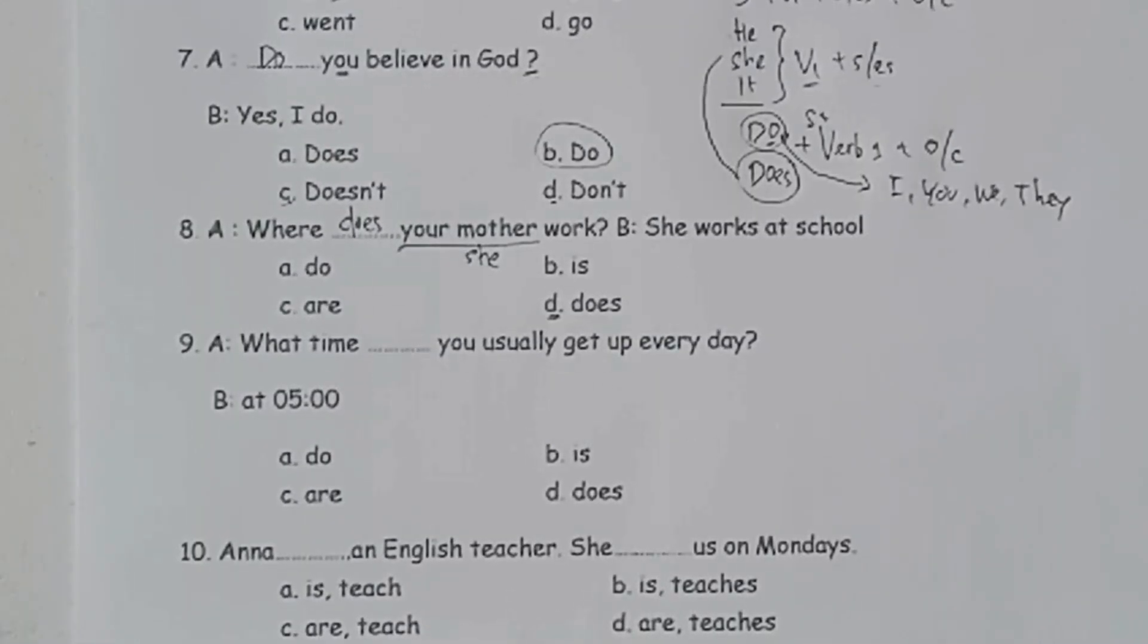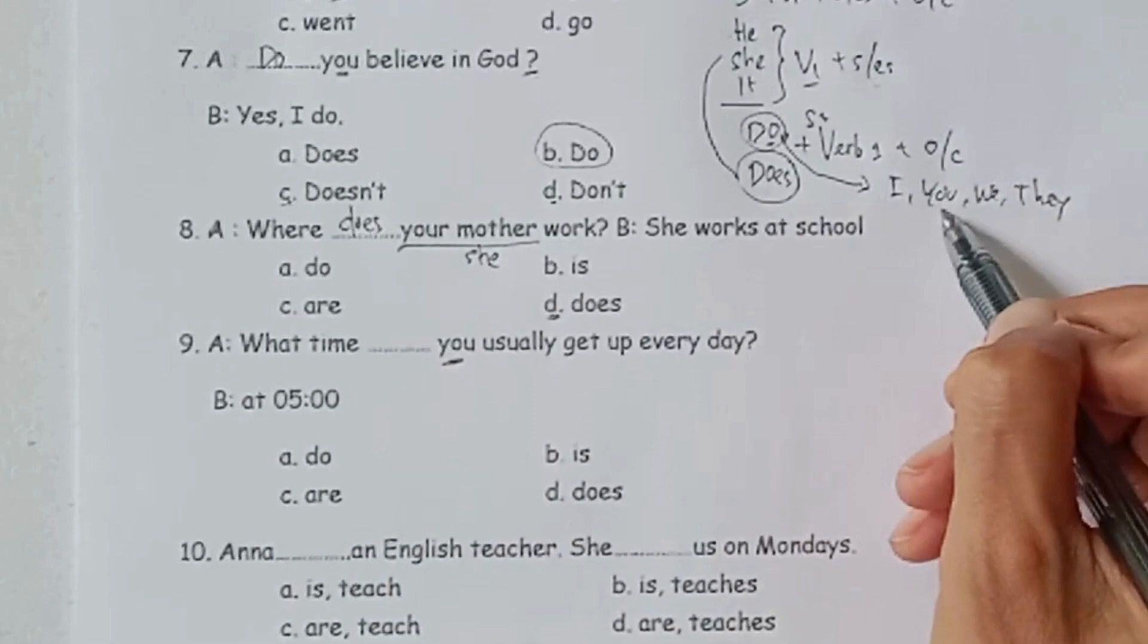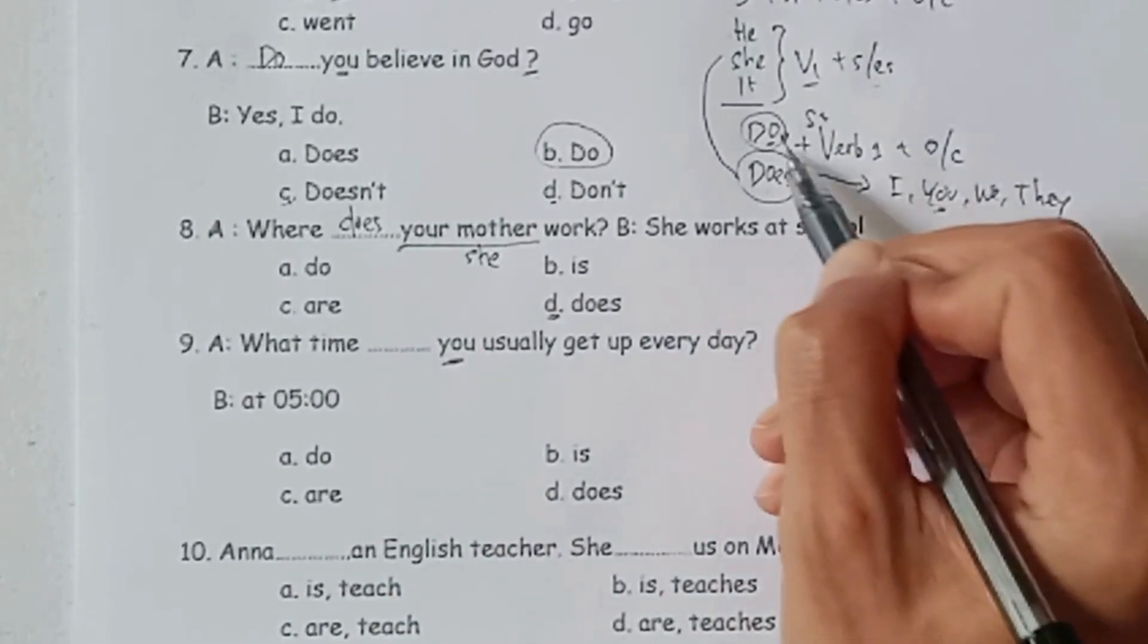Soal nomor sembilan, what time titik-titik you usually get up every day? Si B menjawab at five o'clock. Pilihan jawabannya apakah pakai do, is, are, atau does. Ingat kembali ke aturan awal.